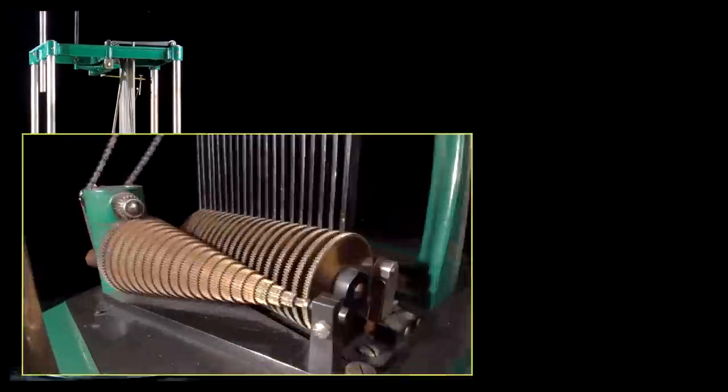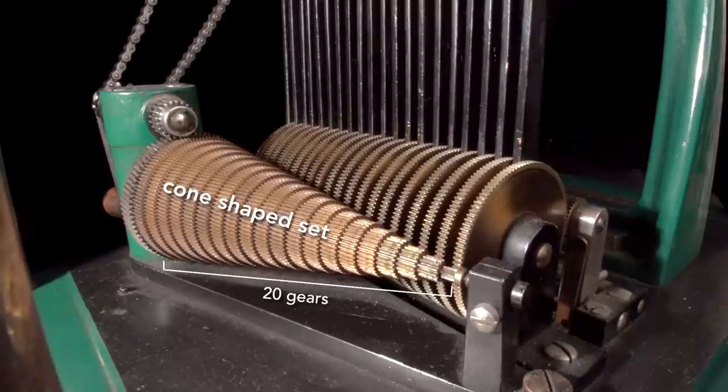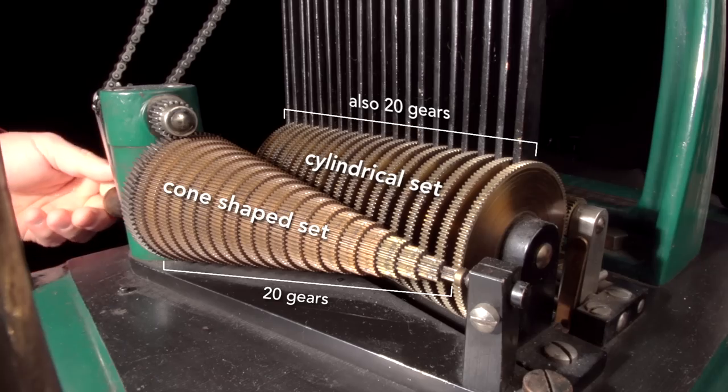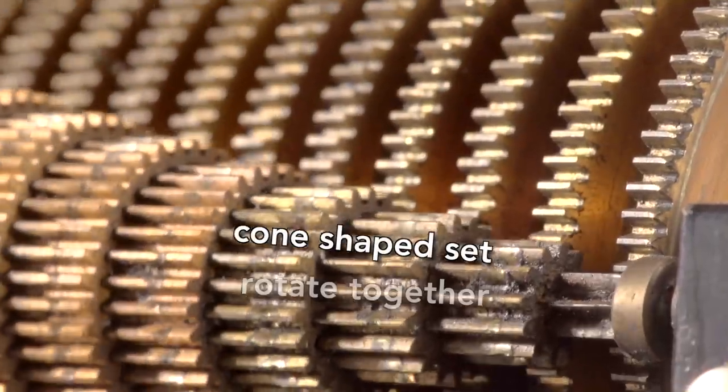At the heart of the machine lies two sets of gears. This cone-shaped set has 20 gears that vary linearly in both size and number of teeth. It engages this cylindrical set of 20 gears, all of the same size. Watch what happens as I turn the crank.